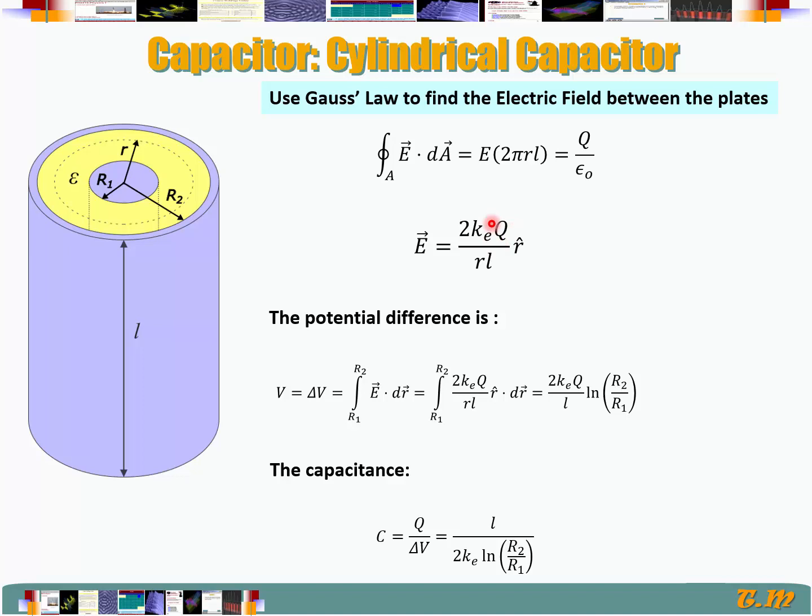To calculate the potential difference, remember it's the energy per unit charge to move a charge from the inner cylinder here to the outer cylinder. We integrate over E·dr from R1 to R2. E being this expression. r-hat dot dr is going to be just dr.